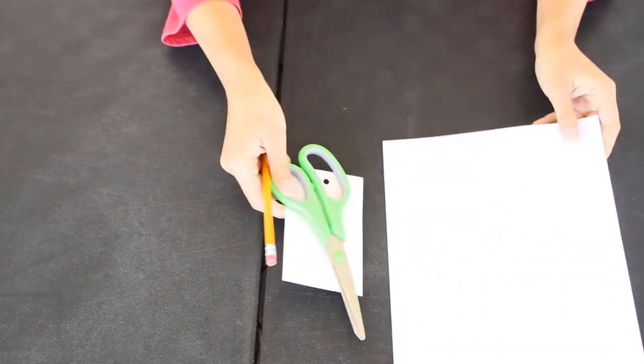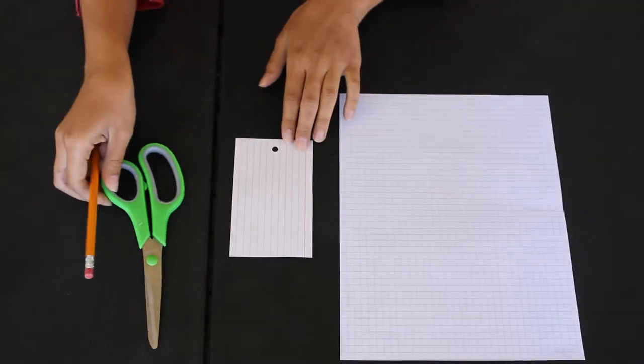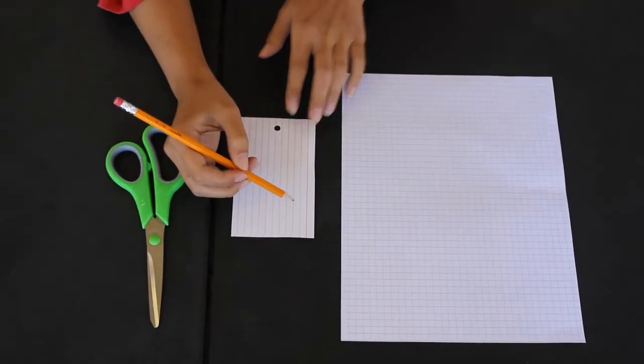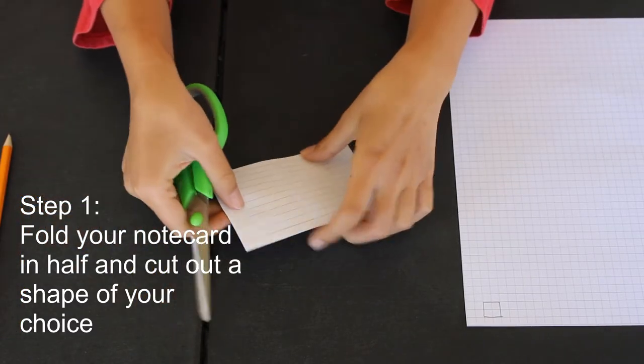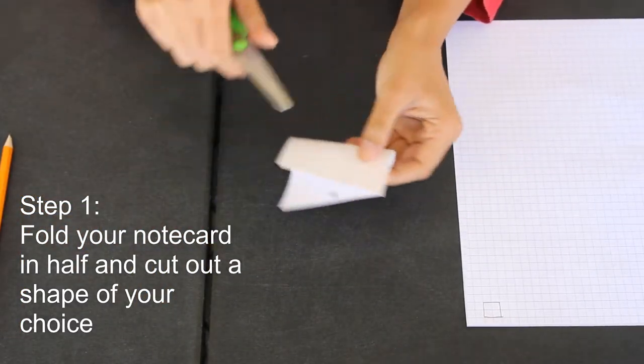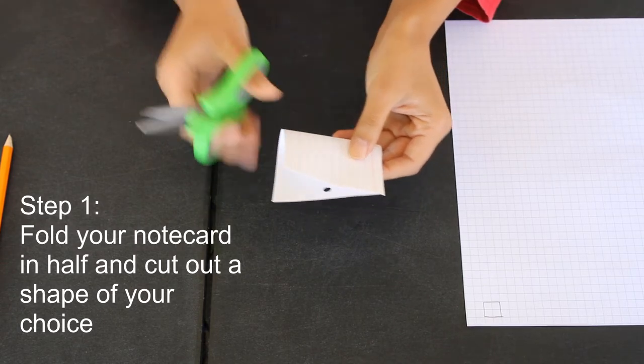So this is what we need for the first thing. We're going to have to cut a hole in here, so I'm going to go ahead, take this, fold it. It could be a circle, it could be a square, it could be a heart really.